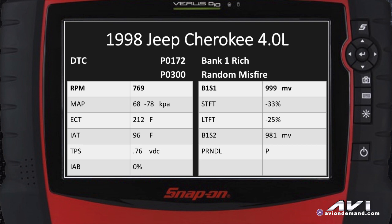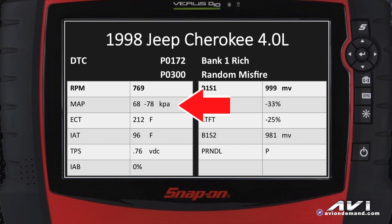Looking at the scan data, at idle we had 769 RPM. The MAP sensor was really erratic — it was dancing between 68 and 78 kilopascals, meaning it was dancing between only about 12 to 13 inches of vacuum. That's a telltale sign right there.